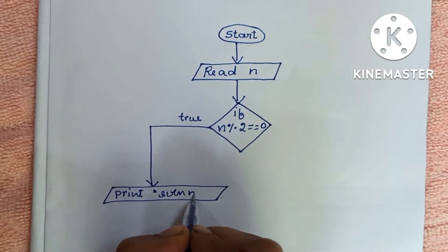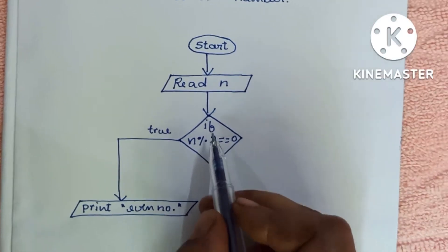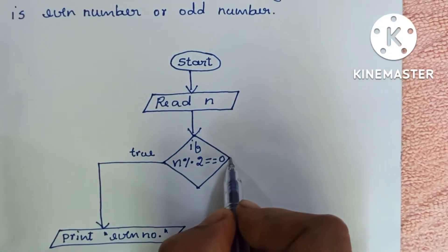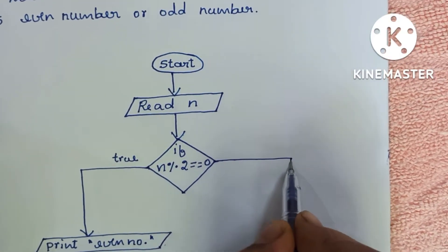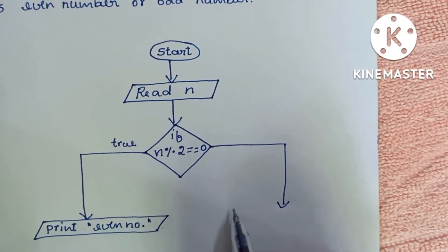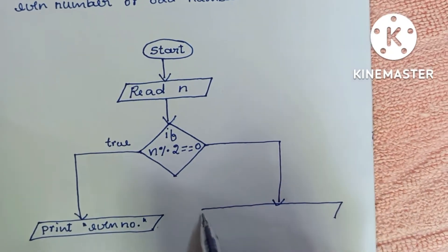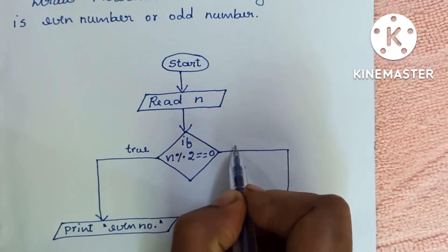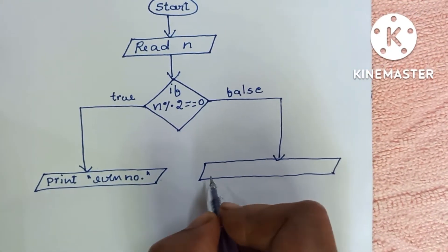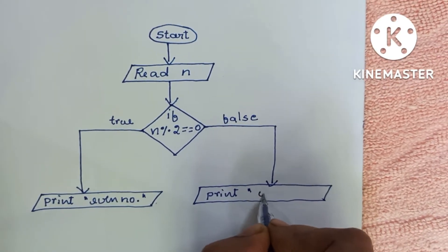In case the condition N modulo 2 equals 0 is false, it will print that the given number is an odd number. Write 'Print Odd Number' in a parallelogram shape on the false branch.